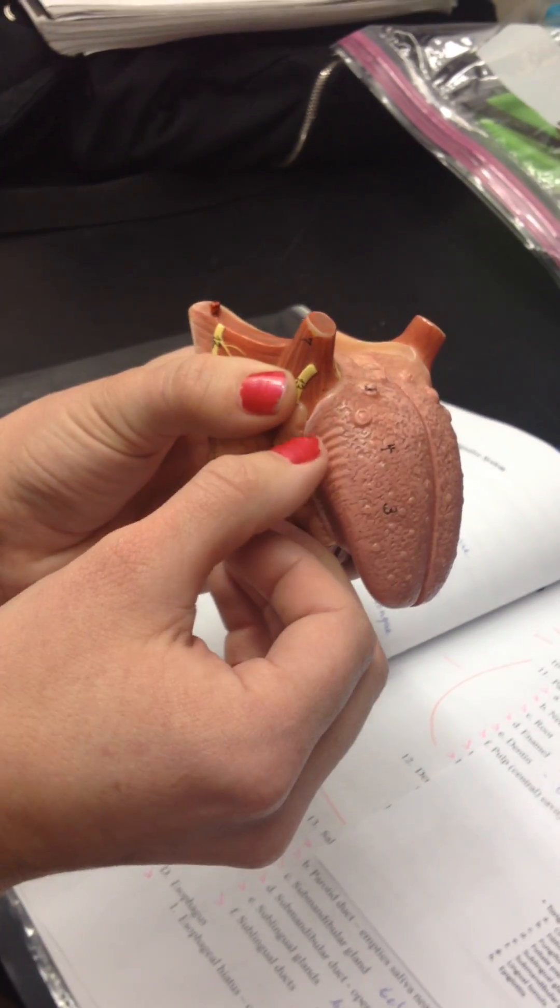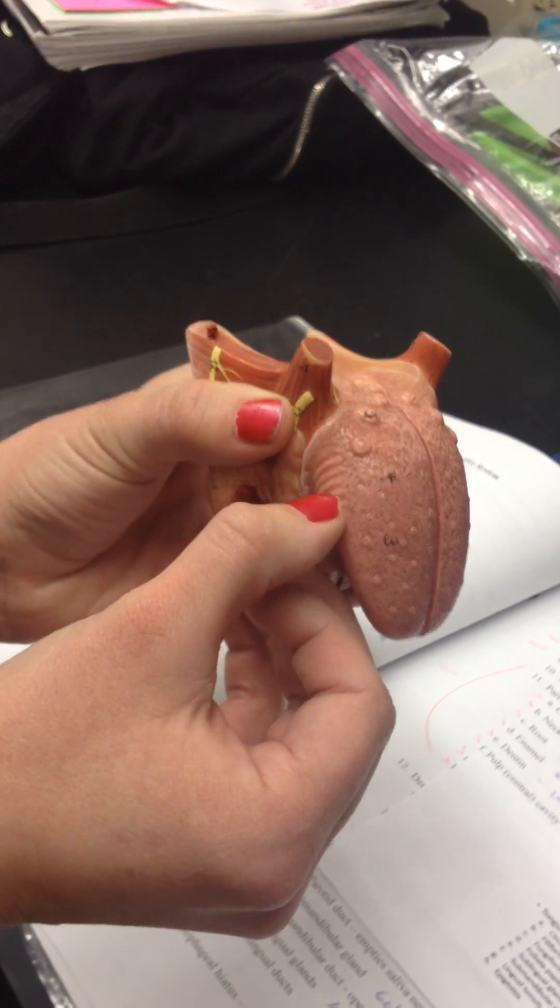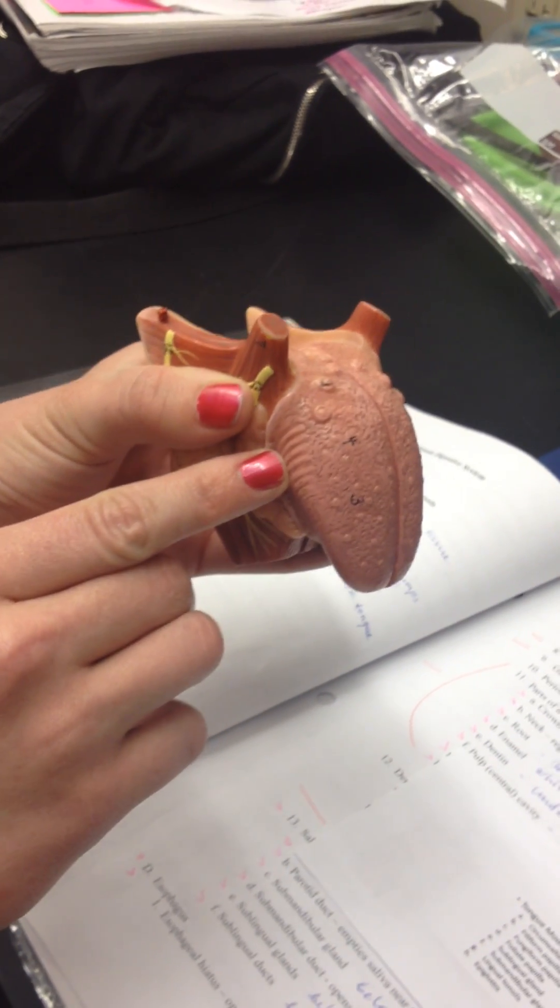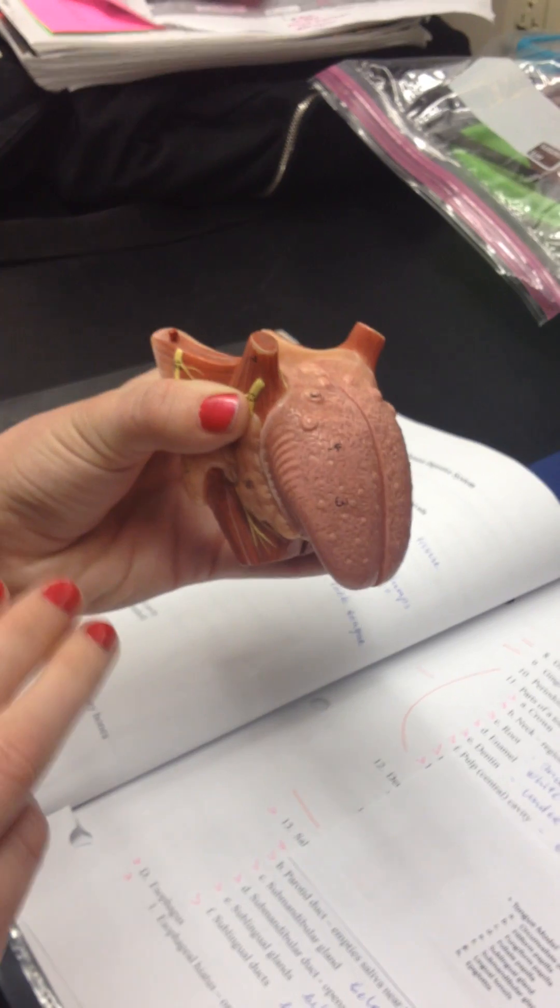Then you have these on the side that look like gills. Those are going to be your foliate papilla. All three of those have taste buds.